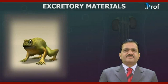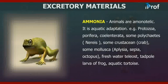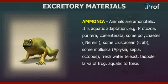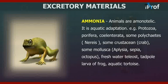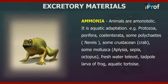First of all, ammonia. Animals that excrete ammonia are called ammonotelic. It is an aquatic adaptation. For example, Protozoa, Porifera, Coelenterata, some polychaetes like Nereis, some crustaceans like crab, some molluscs like Aplysia, Sepia, and Octopus.